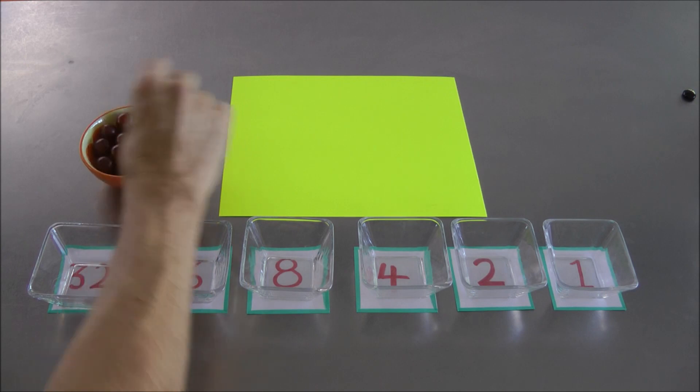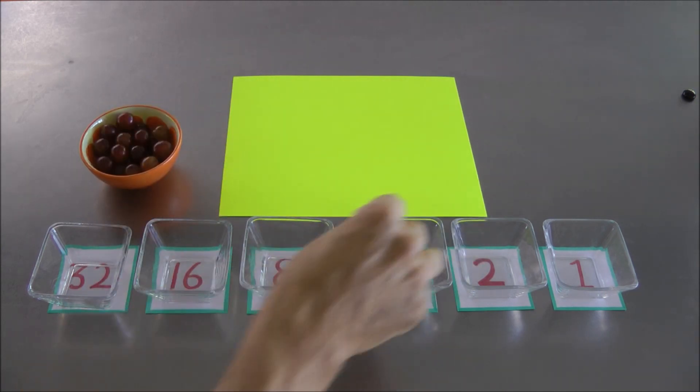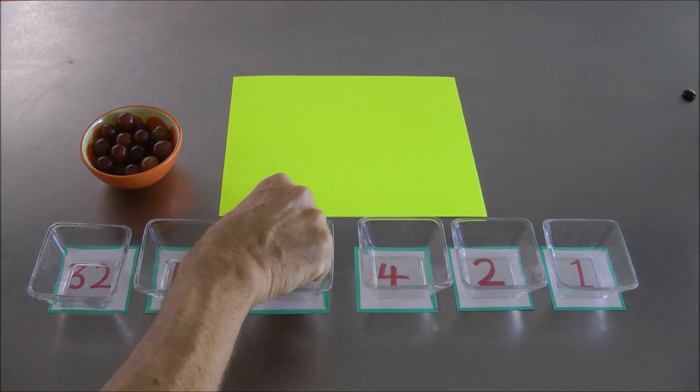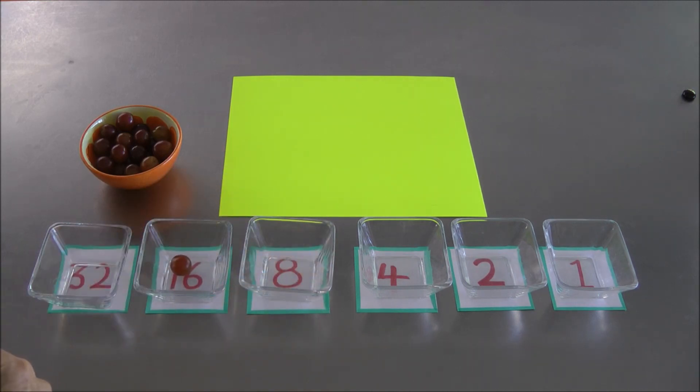And it's clear that two grapes in one dish, two fours for example, kaboom, are equivalent to one eight. One grape, one place to the left. And two grapes in this dish, two eights, kaboom, are equivalent to one grape, one place to the left. One sixteen, two eights is sixteen, and so on. Two sixteens is thirty-two.